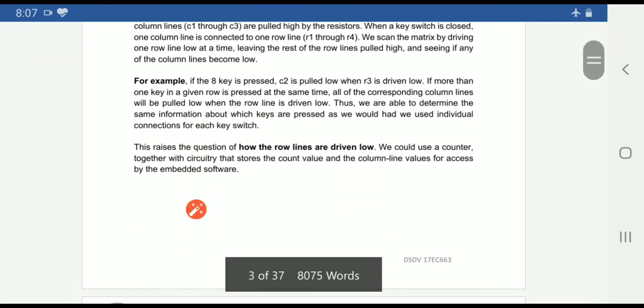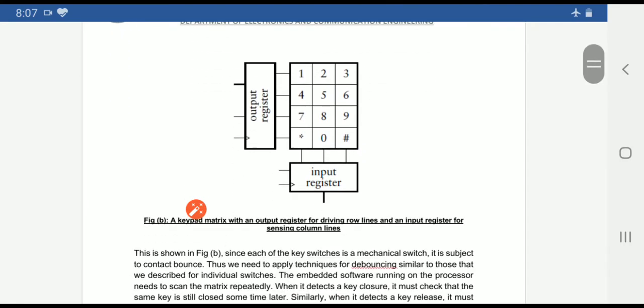Here one example is shown. This is a circuit where an output register drives the row low or high and the input register drives the column low or high. This is an additional circuit which I am explaining, the output register shown here.